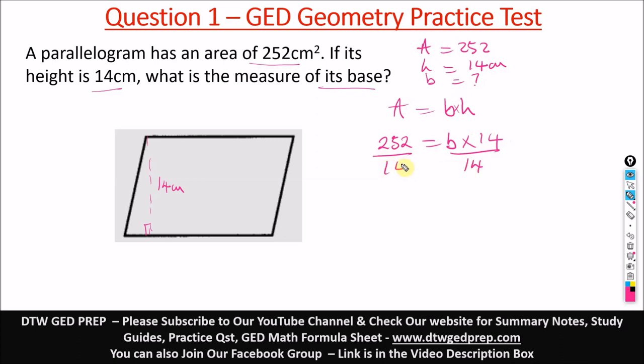Divide by 14, this 14 will cancel out, we're left with just b. And 252 divided by 14 is 18, so b equals 18 centimeters.